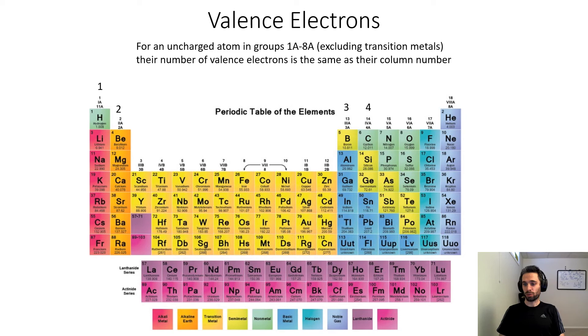Carbon, silicon, germanium. These all have four valence electrons. Silicon, for example, would have four valence electrons and ten core electrons.